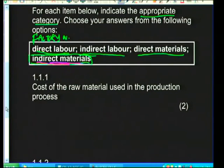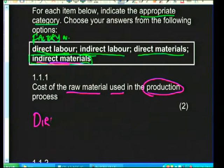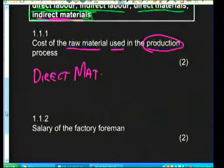The first question: cost of the raw materials used in the production process. Since these materials are actually used in the production process, they must be classified as direct materials. That's two marks for placing it in the correct category.